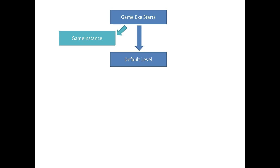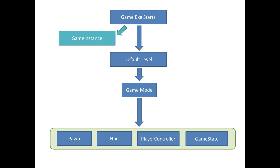It then looks for the default level, and if you remember it was set in that maps thing from the project settings — we'll set that in a minute. It loads the default level which then loads its own game mode, so you can set a custom game mode for the level. The game mode loads a bunch of default objects for that game mode, and you can override the game mode and override these default objects if you need to.